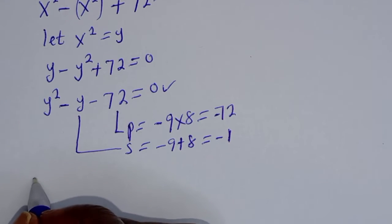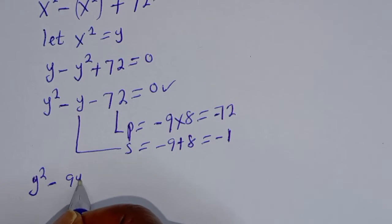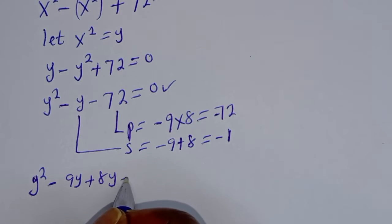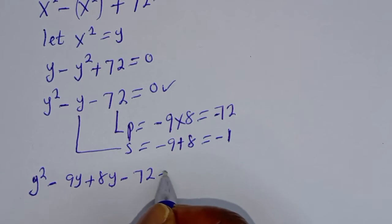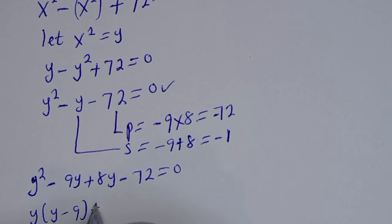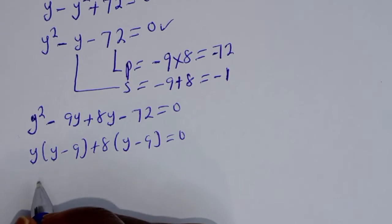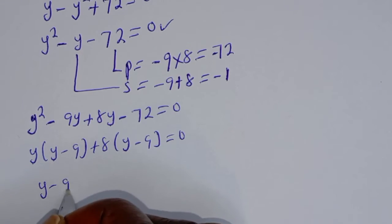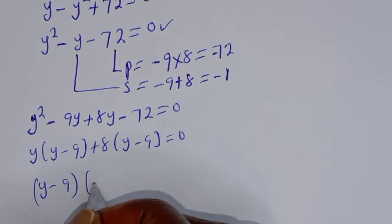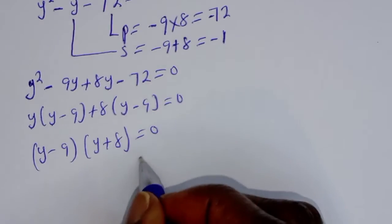Let's substitute: y squared minus 9y plus 8y minus 72 is equal to 0. So y(y minus 9) plus 8(y minus 9) is equal to 0.